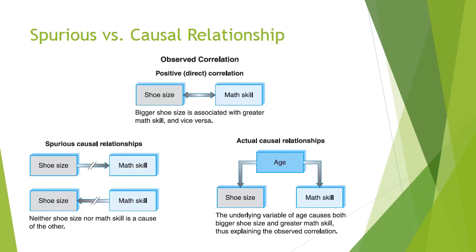Pictures are worth a thousand words. These visuals talk about correlation. The top one shows a positive correlation: the bigger your shoe size, the higher your math skills — or conversely, the higher your math skills, the bigger your shoe size. If it were a negative relationship, one would be going up while the other goes down: the bigger your shoe size, the lower your math score, or the higher your math score, the lower your shoe size.